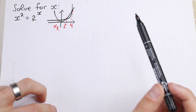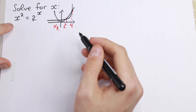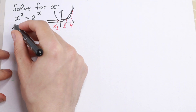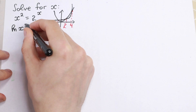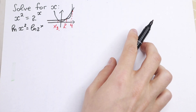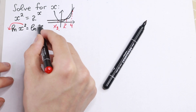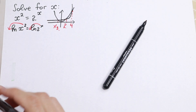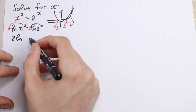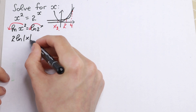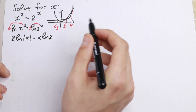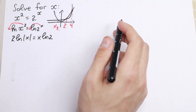Let's simplify this. Let's take the natural log from both sides. Natural log of x² equals natural log of 2 to the power x. Using the natural log power rule, the exponent comes to the front. We get 2·ln|x| — we need absolute value since x is squared — equal to x·ln2.